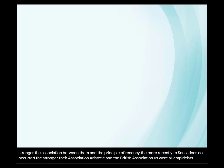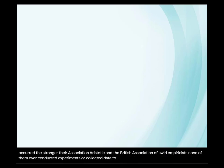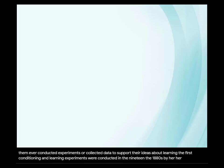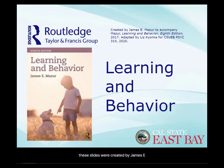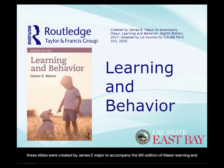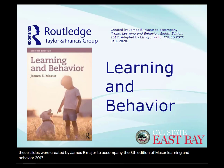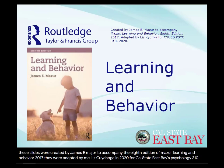Although Aristotle and the British associationists were all empiricists, none of them ever conducted experiments or collected data to support their ideas about learning. The first conditioning and learning experiments were conducted in the 1880s by Herman Ebbinghaus, and they're the subject of the next video. These slides were created by James E. Mazur to accompany the eighth edition of Mazur's Learning and Behavior (2017), and were adapted by Liz Kionka in 2020 for Cal State East Bay's Psychology 310: Conditioning and Learning.